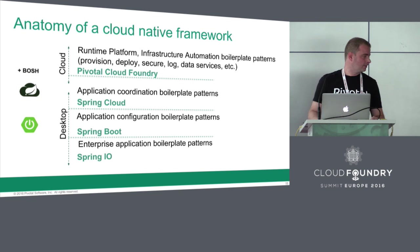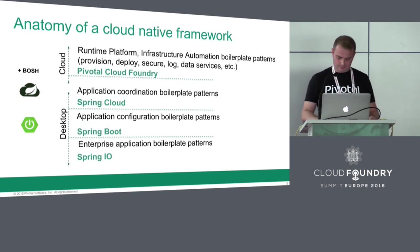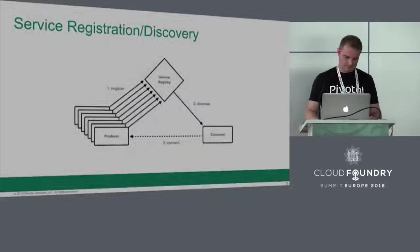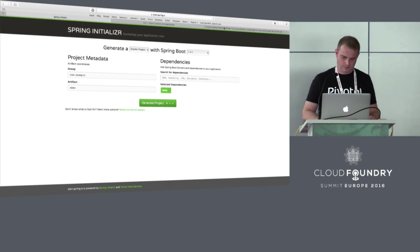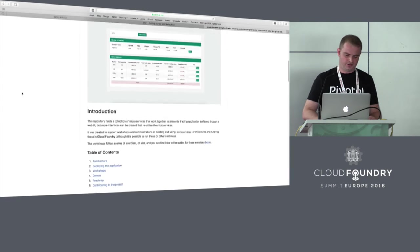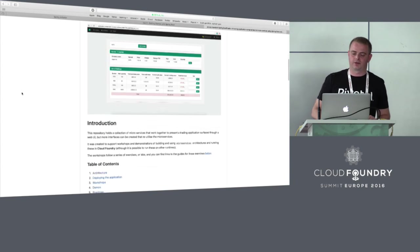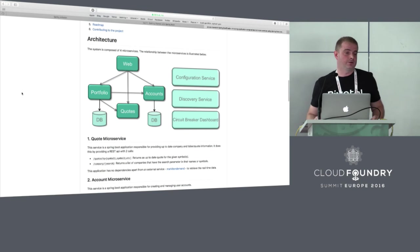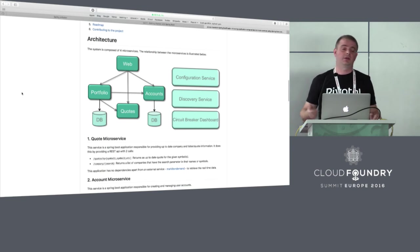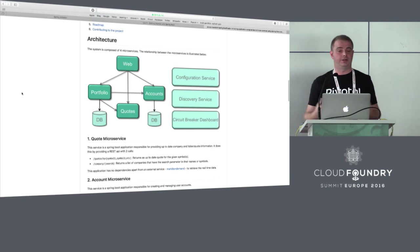The application is on GitHub. These slides will be made available so you can click the link and find out more about the Spring Boot Trader application, which is a set of four microservices — very soon five — and it uses all these cloud capabilities to register and discover themselves. All configuration is shared amongst all microservices so they all have the same properties. We are hiring at Pivotal if anybody's interested.